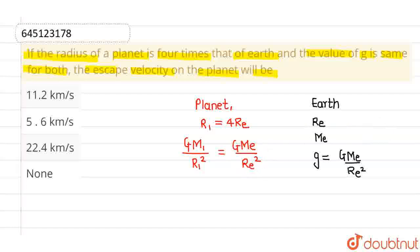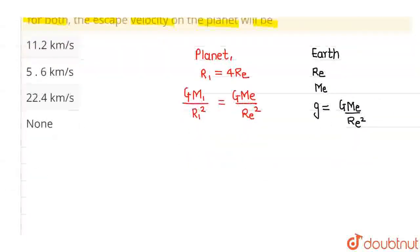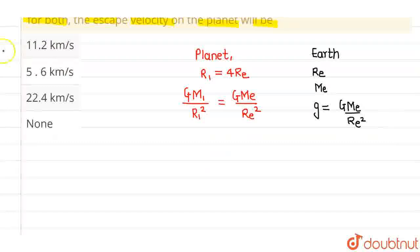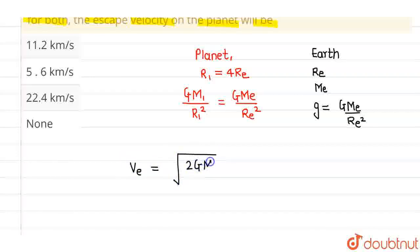Now we have to find out the escape velocity of the planet. So first thing, we know that escape velocity, which is Ve, is given by root over 2GM divided by R. This is the value of escape velocity.